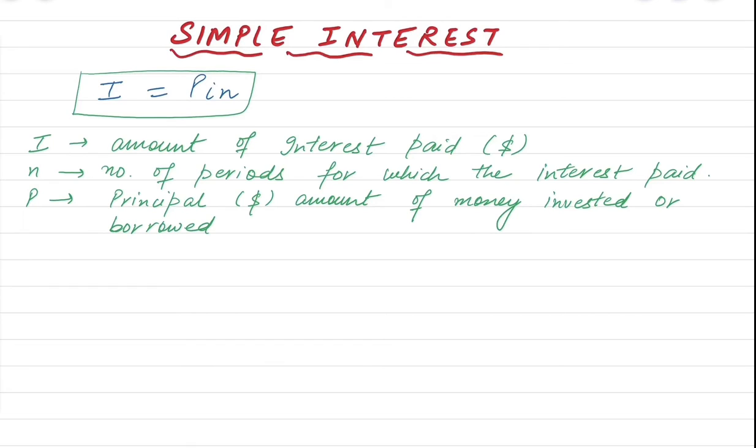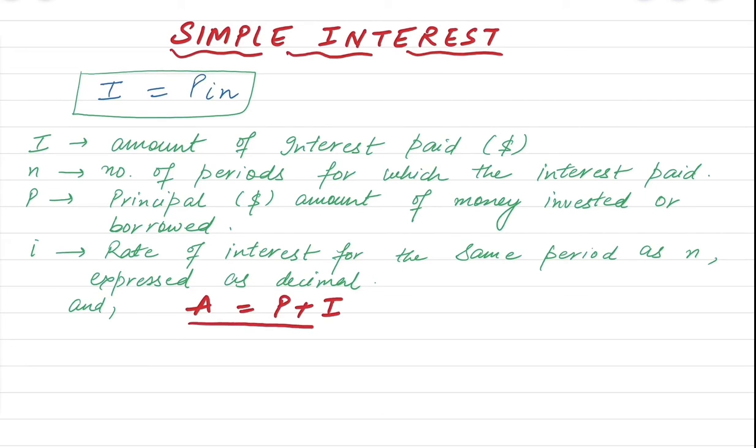Invested and borrowed. Small i, which is the rate of interest for the same period as N. Period is basically the number of years, months or weeks or anything. So rate of interest for the same period as N expressed as a decimal. And A is equal to P plus I. What is A in here now?